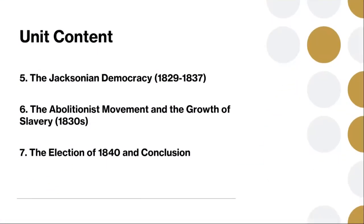As we go further into the unit, we will discuss Jacksonian democracy. Andrew Jackson's presidency marked the rise of what we call Jacksonian democracy, characterized by increased suffrage for white men and a more populist approach to politics. However, Jackson's policies also led to the forced removal of indigenous peoples, most notably the Trail of Tears.